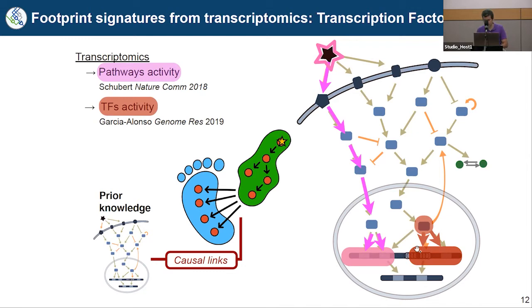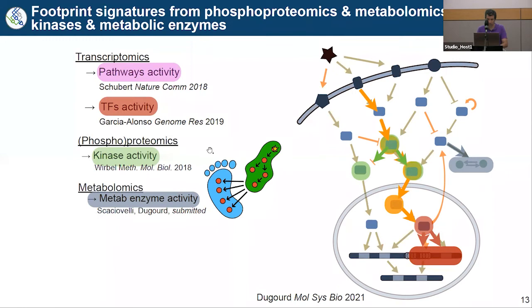The same applies to transcription factors — whether the RNA of a transcription factor is higher or lower only roughly correlates with its activity, but for many transcription factors we know what the target genes are, so we can use that regulon to estimate transcription factor activity. Similarly, phosphoproteomics reflects kinase activity — if we know which phosphorylation sites are controlled by which kinases, we can estimate kinase activity. For metabolomics, metabolites are controlled by metabolic enzymes, so by looking at changes in metabolites we can estimate the activity of metabolic enzymes.